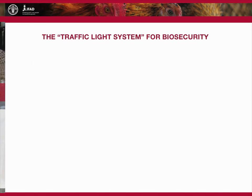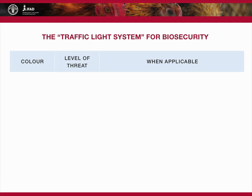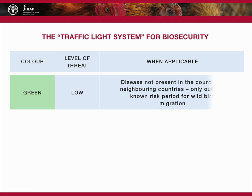In the event of an epidemic, high levels of biosecurity measures should be enforced. One way of understanding different threat levels is to use the traffic light system. Green represents the lowest threat level, and should be used when disease is not present in the country or in neighbouring countries. Green is only used outside the known period of wild bird migration, as these can carry disease from one area to another.